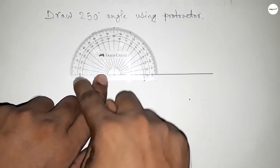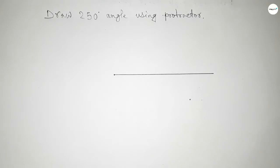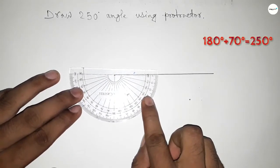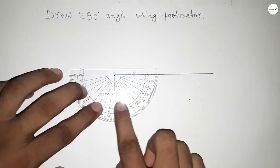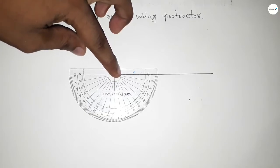Now counting the angle. This is up to 180 degrees, but we have to draw a 250 degree angle. So we have to add 70 degrees with 180 degrees. Now for 250 degrees, putting the protractor by this way.